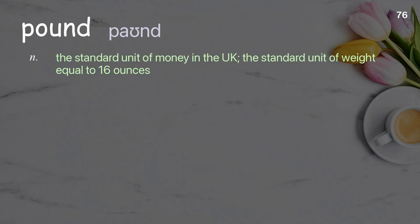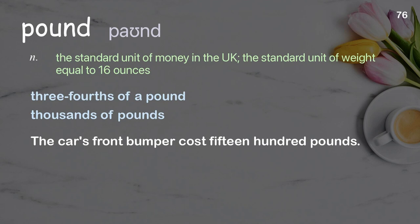Pound: The standard unit of money in the UK; the standard unit of weight equal to 16 ounces. Examples: Three-fourths of a pound. Thousands of pounds. The car's front bumper cost fifteen hundred pounds.